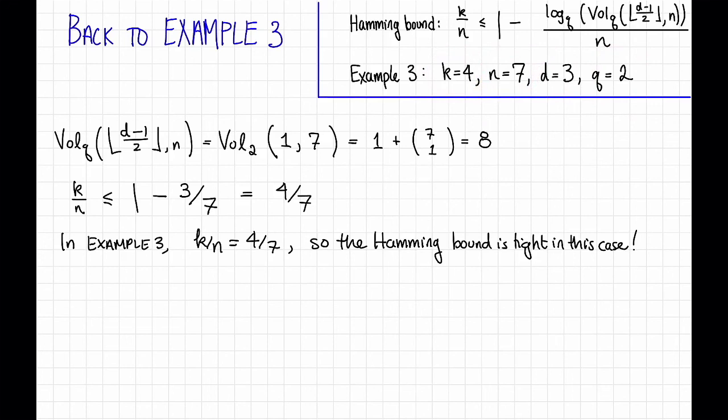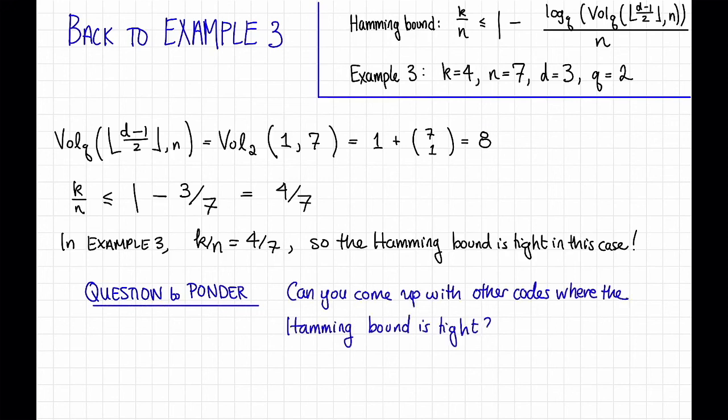Okay so that just about wraps it up for this video but I want to leave you with a question to ponder. And the question is can you come up with other codes so that the Hamming bound is tight? Such codes would be provably optimal at least in their trade-off between rate and distance. In particular can you generalize this example three that we saw or can you come up with some completely different code with these same parameters or with different parameters? We'll address this question to some extent in a future video.